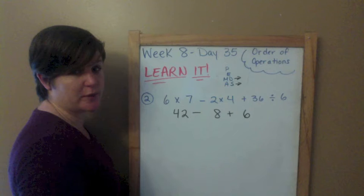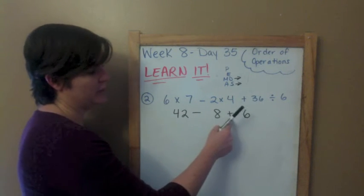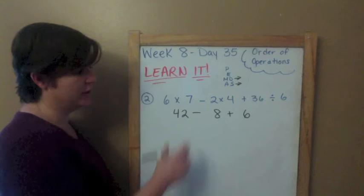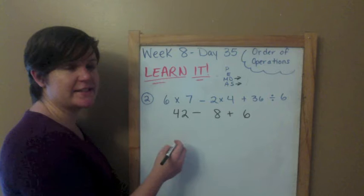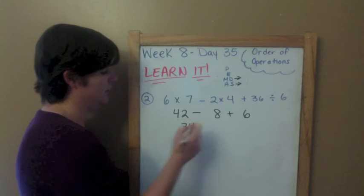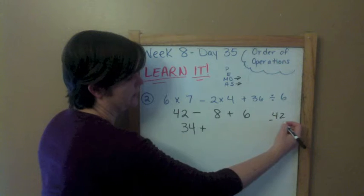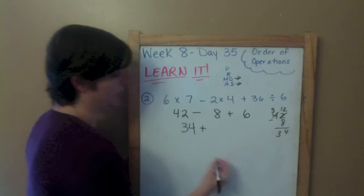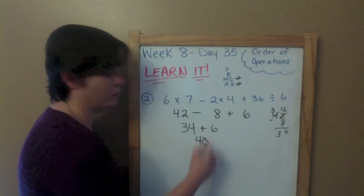I finished my multiplication and division, and now I'm on the addition and subtraction step. I'm not going to add first because they are on the same playing field — I do subtraction first because I'm going from left to right. 42 minus 8 is 34, plus 6. 34 plus 6 is 40.